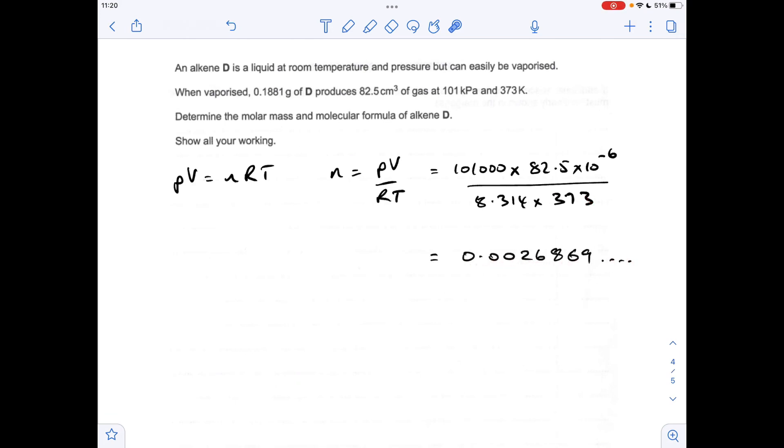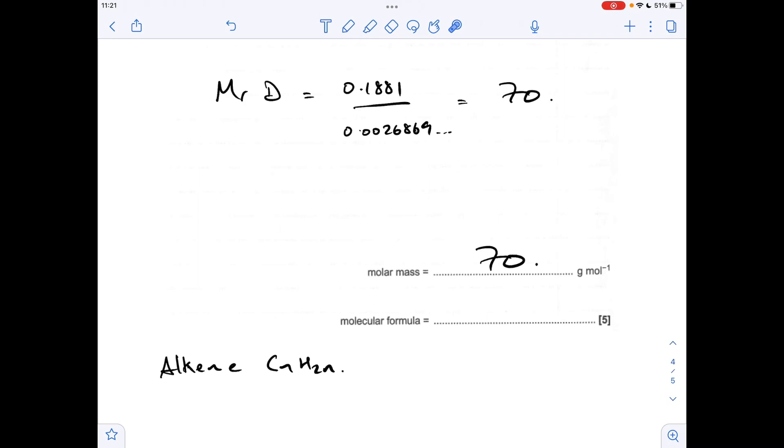That dot, dot, dot just means that I haven't written the full calculator value in, and all we need to do now is work out the MR. So mass over moles, which comes out at 70. And the final thing we need to do is give the molecular formula for the alkene. So there's a reminder of the general formula, CnH2n. So if we've got five carbons, we'll have 10 hydrogens, and that has an MR of 70. So the molecular formula is C5H10.